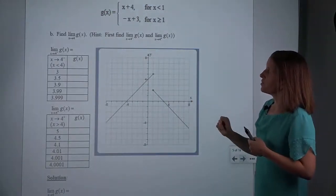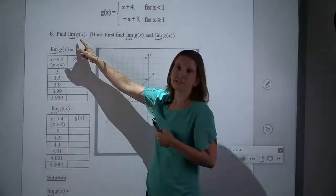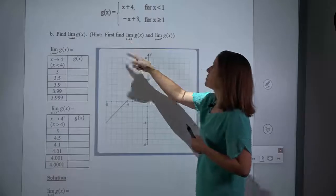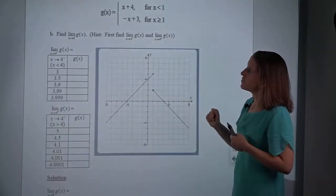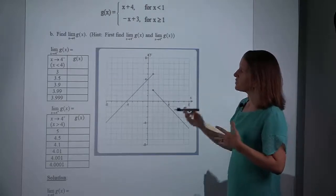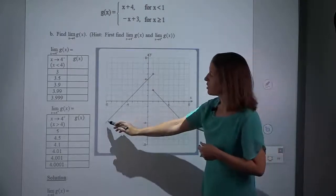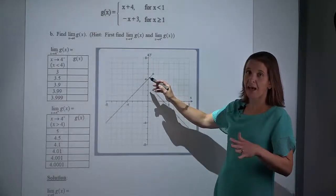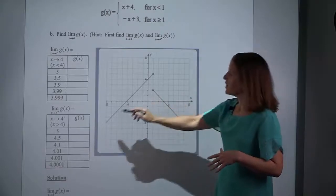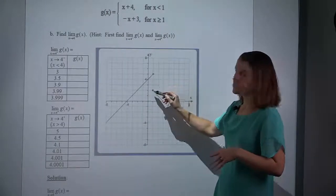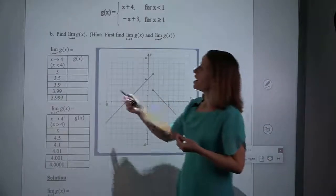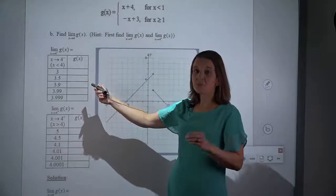Same function, but this time we're approaching 4. To answer the limit as x approaches 4 without any superscripts — meaning from both sides — we have to first check from the left, from the right, and then see if they are equal. Since I'm coming from the left of 4 but close to 4, I'm going to start about a unit away. So if I'm using numbers to the left of 4 but close to 4, like 3, 3.5, 3.9, 3.99, all of those qualify for the negative x plus 3 piece since they are all greater than 1.